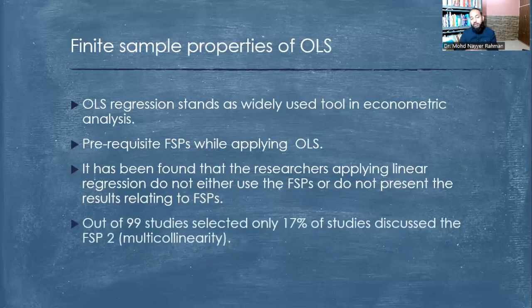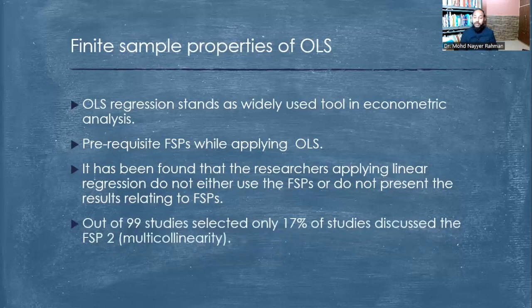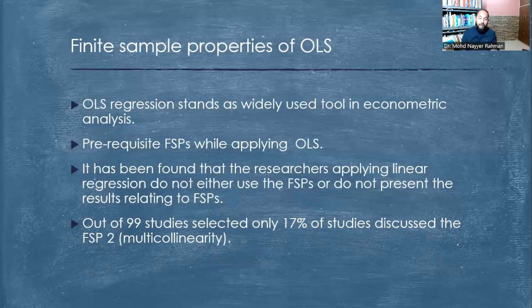One published study examined how finite sample properties have or have not been used. It found that out of 99 studies selected, only around 17% — approximately 16 studies — discussed FSP2, multicollinearity. Most studies considered only linearity and normality before applying regression. However, this is not the acceptable approach in econometrics; we must check and justify all the finite sample properties.